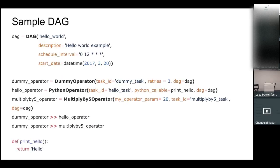Let's take an example of a sample DAG — the Hello World DAG. It has three operators: the dummy operator, a Python operator, and a custom operator called the multiply-by-five operator. The dummy operator has a downstream dependency on the hello operator and the multiply-by-five operator. What my custom operator does is take whatever argument you pass, multiply it by five, and return the result.